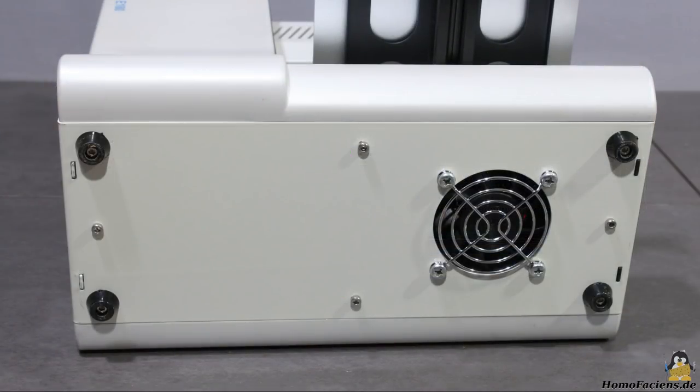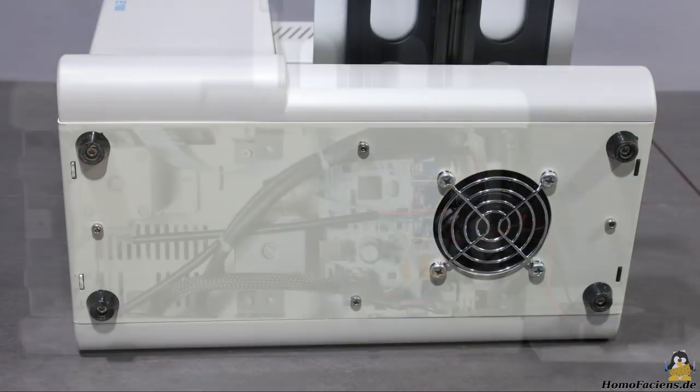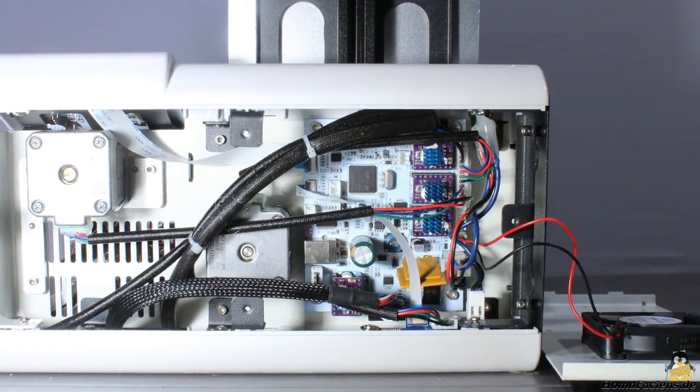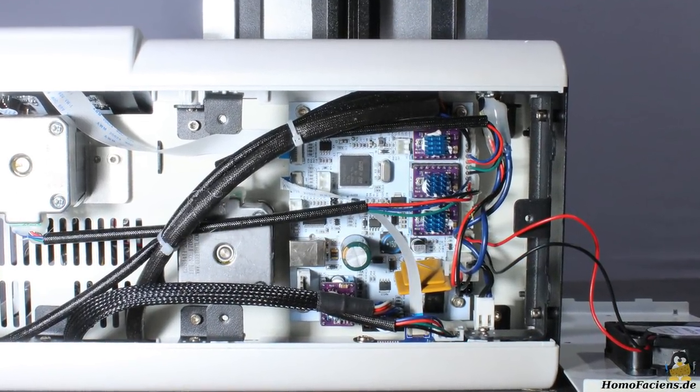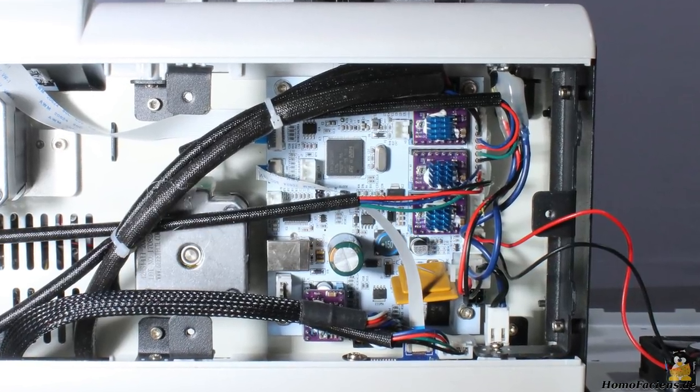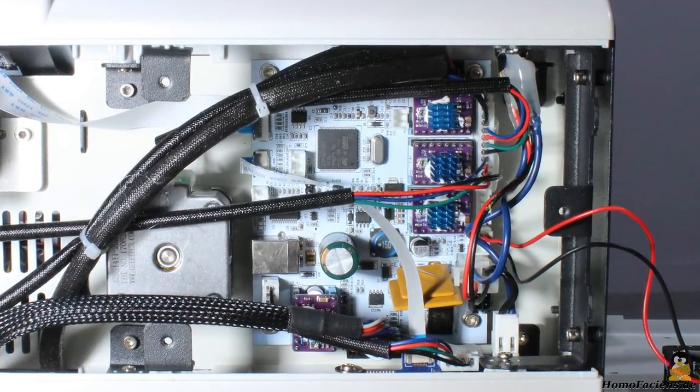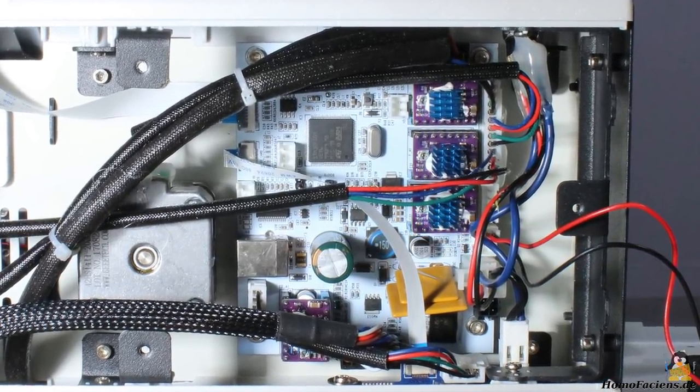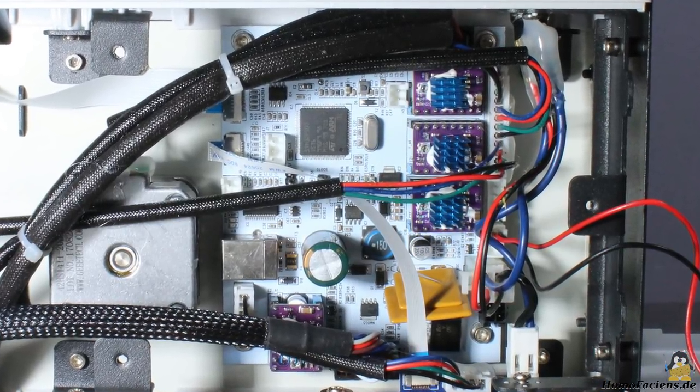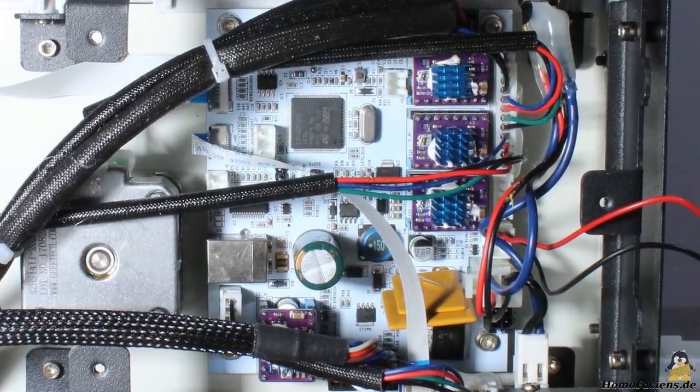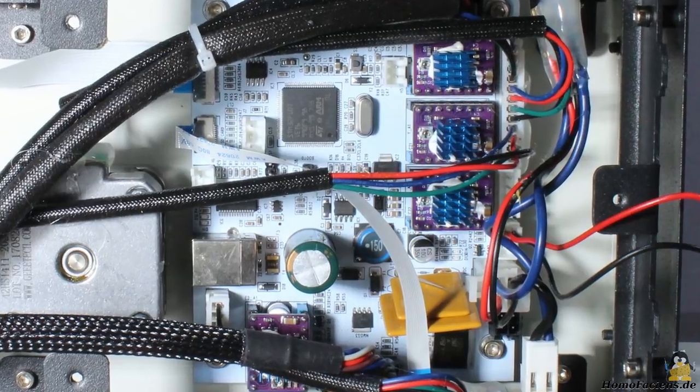After loosening 4 screws on the bottom plate, you can see the tidy interior of the printer. A STM32 microcontroller with a clock speed of 72MHz is used as CPU. The motor drivers are plugged on the mainboard so that those parts can be replaced easily in case something goes totally wrong.